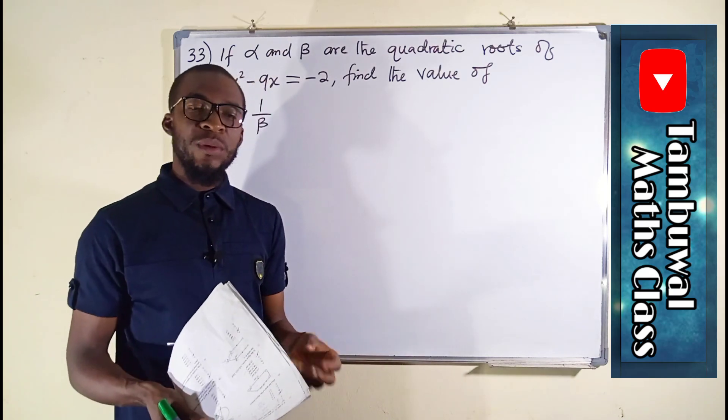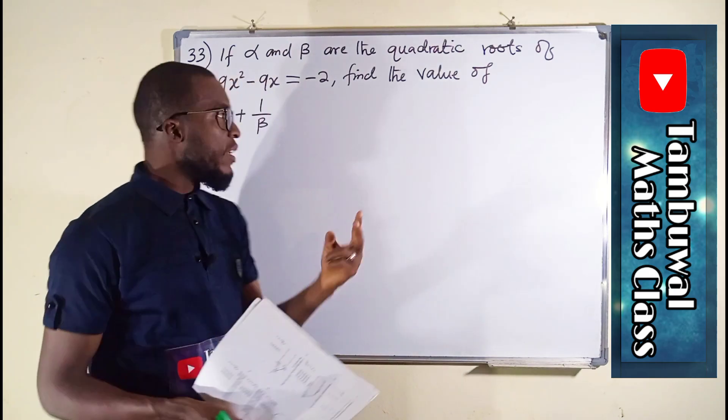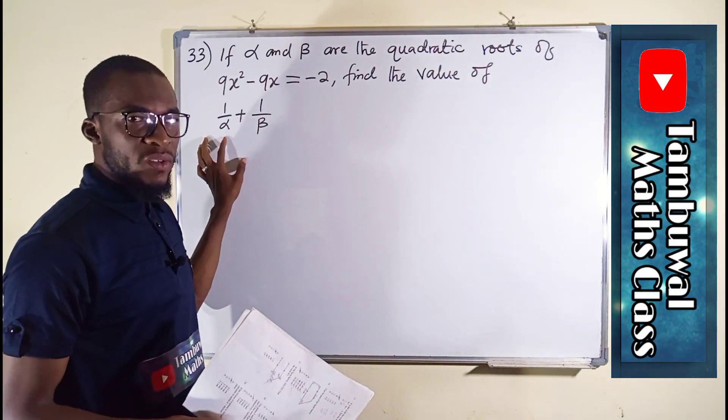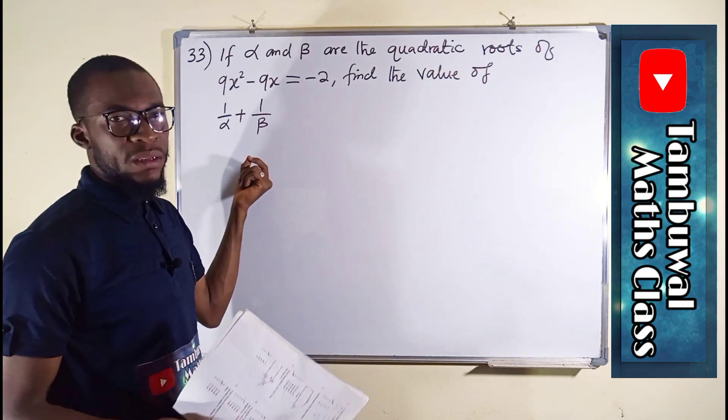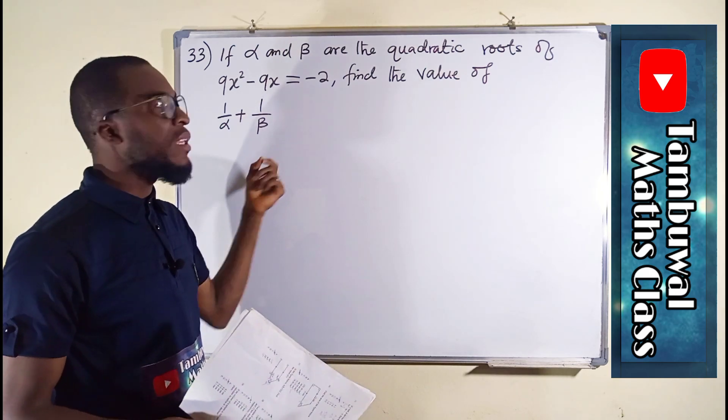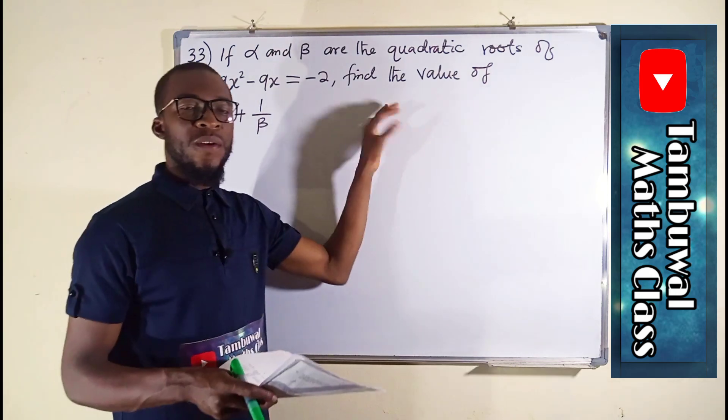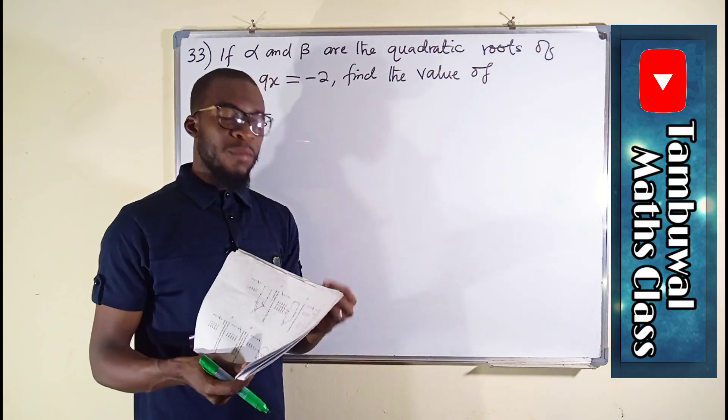It means you should take the reciprocal of each value and add them together. Whatever you obtain is the required solution. If you are following me on YouTube, I have made a video that talks about the relationship that exists between quadratic roots and quadratic coefficients.